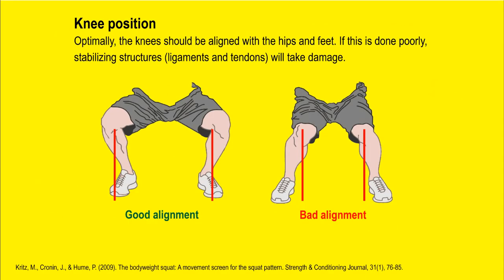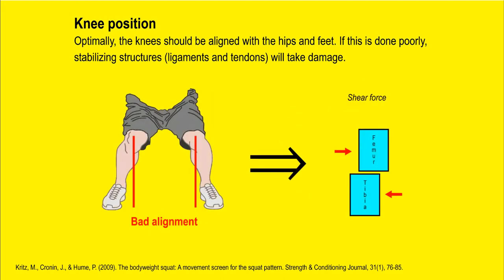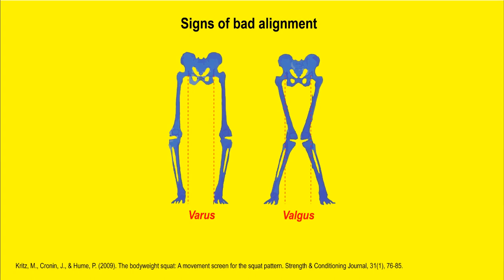When it comes to knee positioning, optimally the knees should be aligned with the hips and the feet. If this is done poorly, the ligaments and tendons will take damage, because the shear force gets combined with compressive force from the weight on your back. If you're not able to maintain this alignment, it can be due to underdeveloped musculature surrounding the knees — the hamstrings, rectus femoris (which attaches the hip and knee joints), the gastrocnemius (which attaches the knee and ankle joints), and many others. If those are weak or lack adequate flexibility, proper alignment becomes difficult.